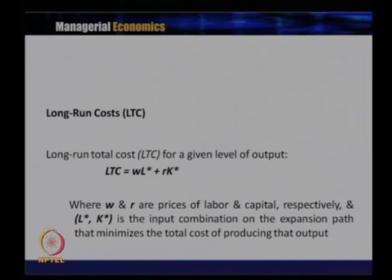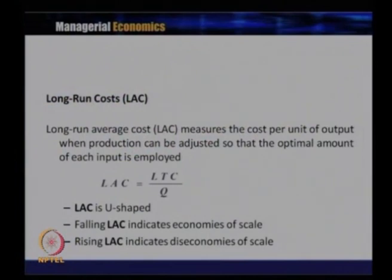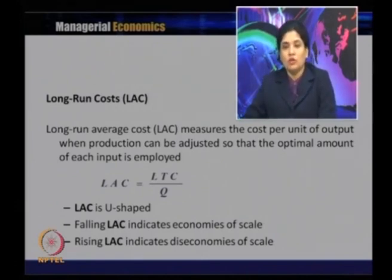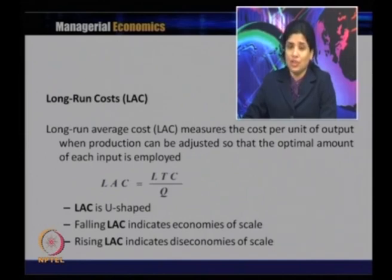The long run average cost (LAC) measures the cost per unit of output when production can be adjusted so that the optimal amount of each input is employed. LAC = LTC / Q, where Q is the unit of output. The long run average cost curve is U-shaped. Decreasing long run average cost indicates economies of scale, and increasing long run average cost indicates diseconomies of scale.